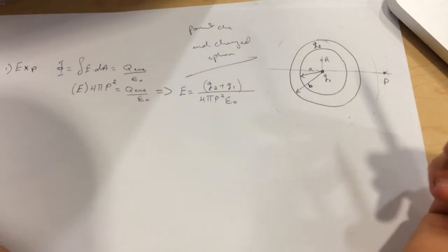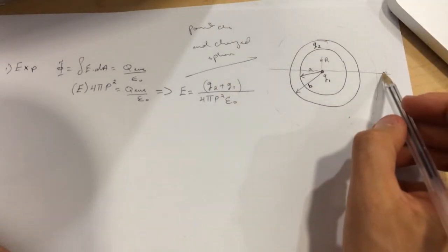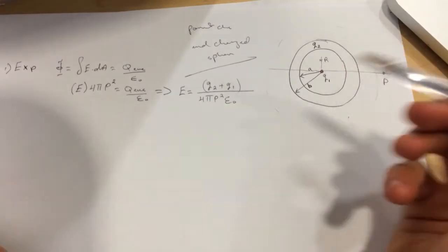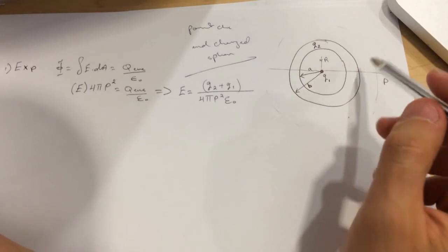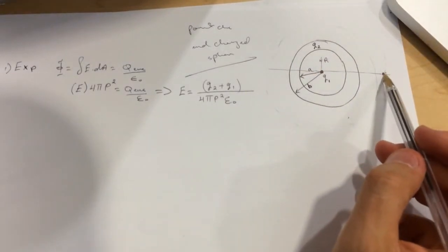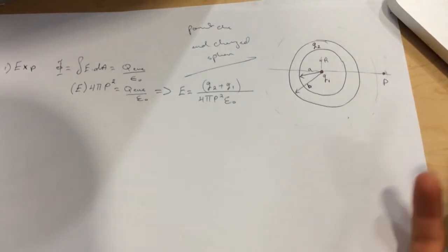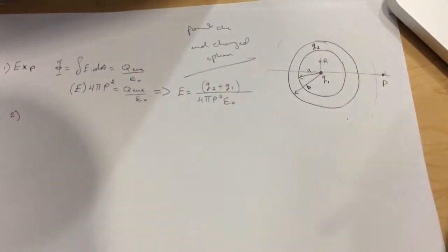If the negative charge was larger, then the electric field will be pointing in the negative x-direction. If the positive was larger, then the electric field is pointing to the right.